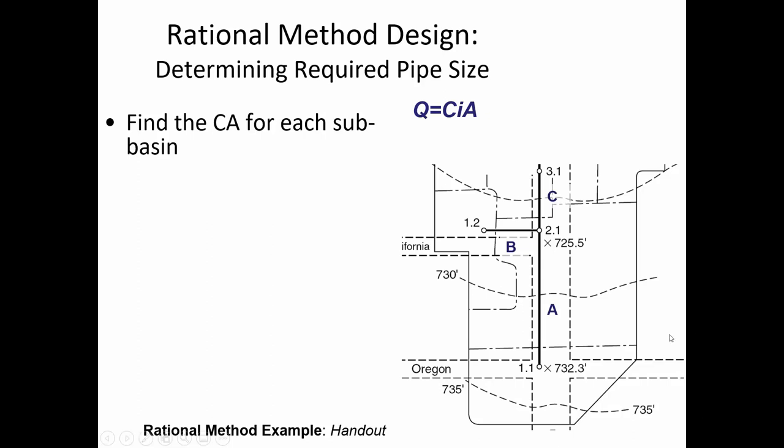The process: first we want to find the area multiplied by the C value. Who can refresh our memory on what the C value is? Coefficient of runoff — good. And roughly speaking, how would you explain what it is? It differentiates between the water that's absorbed and that which is running off. So is the C value going to be high or low for pavement, where there's not much infiltrating into the soil?